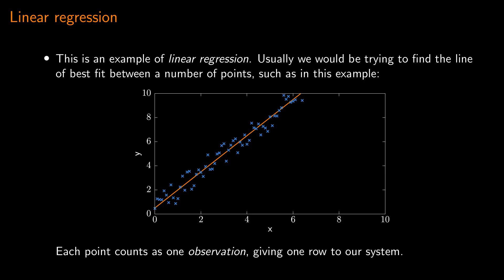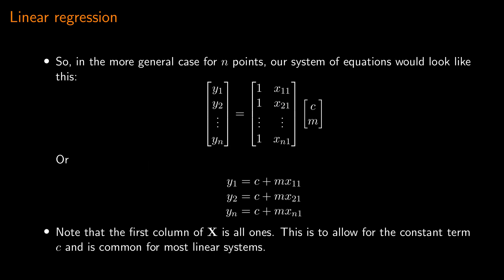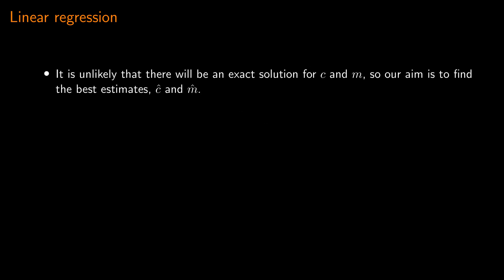Usually with linear regression, we would be trying to find the line of best fit to a large number of points. Every point counts as one observation and contributes one row to our system. For n points our system takes vector form y equals x times beta, where the first column of the x matrix is all ones — this is because of the constant term c in the model equation y equals mx plus c. In the general case, it is unlikely that there will be an exact solution for c and m, so our aim is to find the best estimate, c-hat and m-hat.